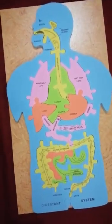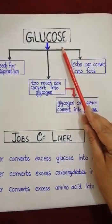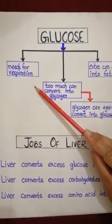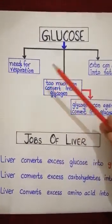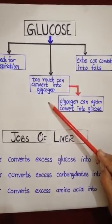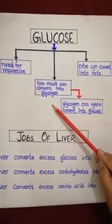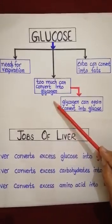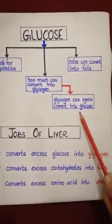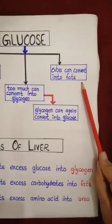After a meal, carbohydrates are broken down into glucose. Glucose is needed for respiration because it reacts with oxygen and produces energy. A constant supply of glucose circulates in the blood. If its rate increases, the liver converts some into glycogen. Too much glucose can be converted into glycogen by the liver. The insoluble glycogen can again be converted into glucose when needed.